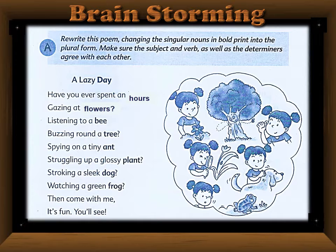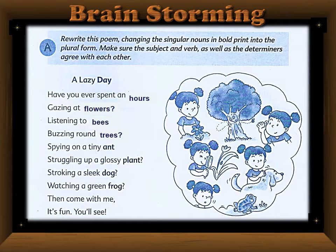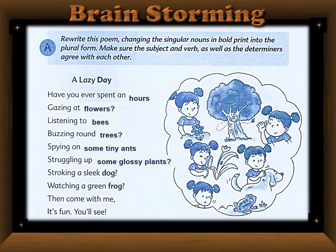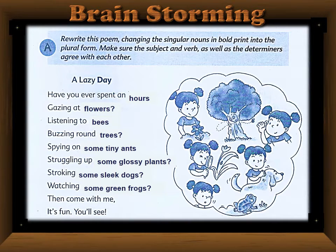The article 'a' is omitted automatically when we pluralize. So you will cut off 'an' in the first line too. 'Listening to a bee' becomes 'listening to bees'; 'buzzing round a tree' becomes 'trees'; 'spying on a tiny ant' — this is singular — you can change the determiner to 'some' if you want: 'some tiny ants.' Then 'struggling up a glossy plant' becomes 'some glossy plants'; 'stroking a sleek dog' becomes 'some sleek dogs'; 'watching a green frog' becomes 'some green frogs.'